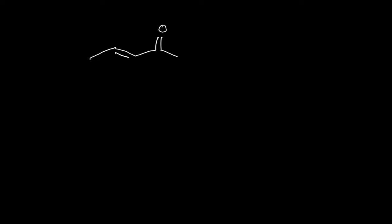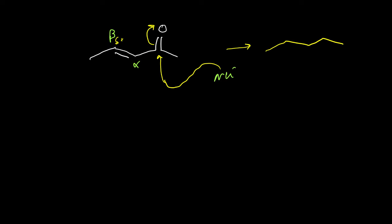Let's start with this example to explain what the Michael reaction is. This alpha-beta unsaturated ketone can react with a nucleophile. The carbon of the carbonyl group has a partially positive charge, and in addition, the beta carbon also has a partially positive charge. So there are two different possibilities for addition of a nucleophile to this compound. The nucleophile can attack the carbonyl group and push the pi bond to the oxygen, giving us this intermediate anion.